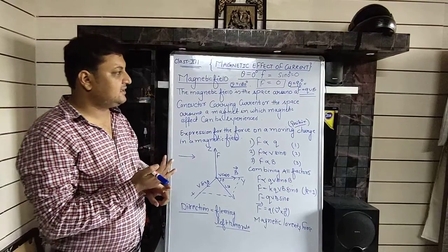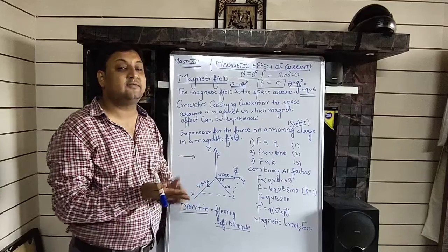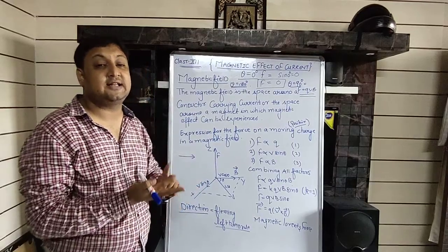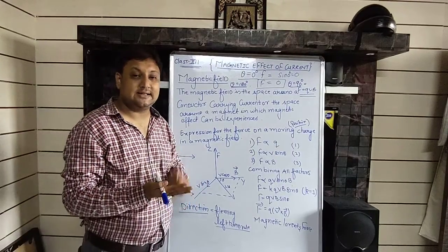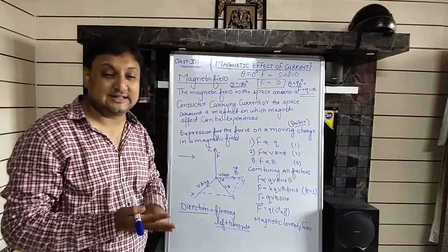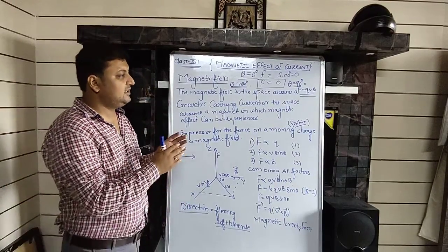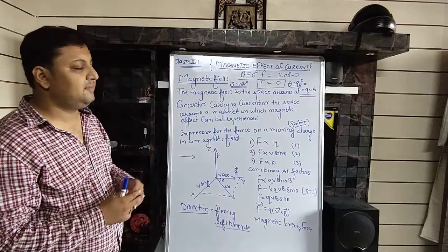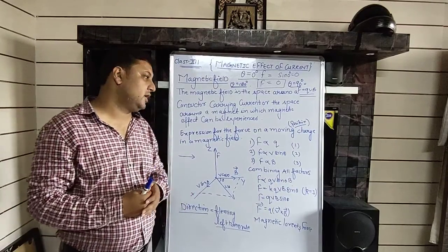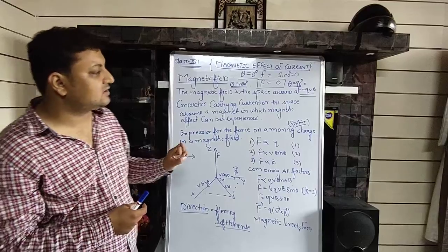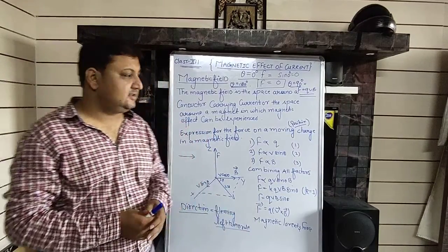So if sin 0° gives force = 0, sin 180° also gives force = 0. The maximum value of sin is 1, which occurs at sin 90°.